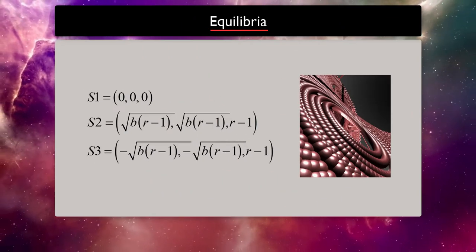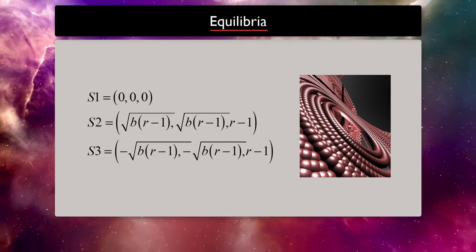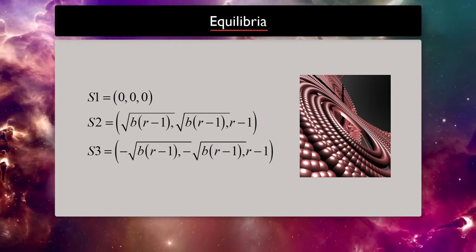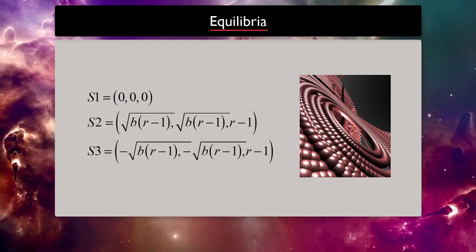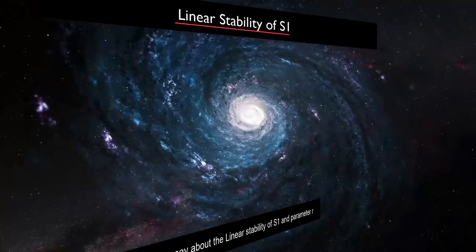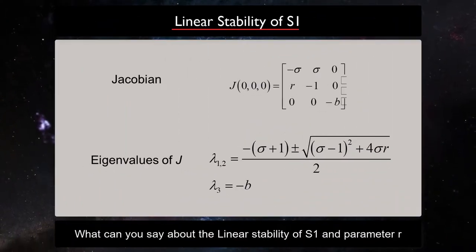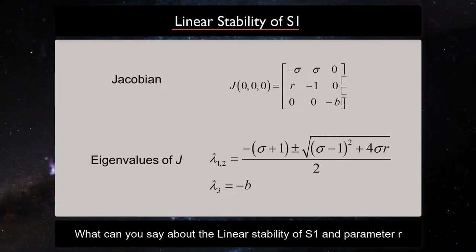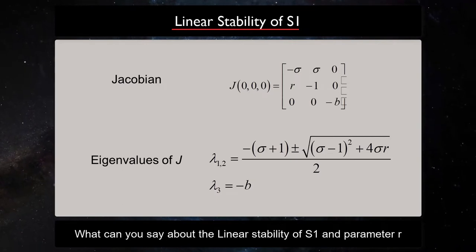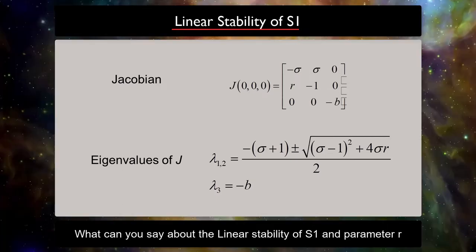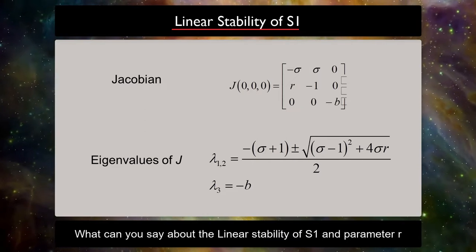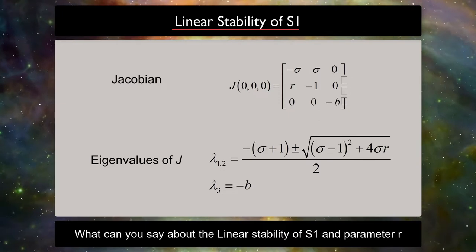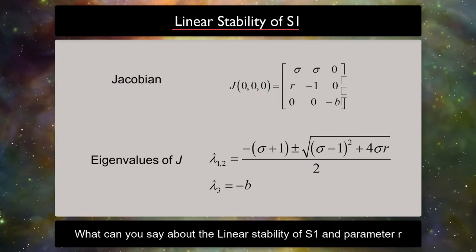Let's look at the fixed points of the system. The system has three fixed points: s1, s2, and s3. If we calculate the Jacobian of the system at each of these three fixed points and calculate them for the recommended parameter values, then we can see all three fixed points are unstable, because they all include an eigenvalue with a positive real part.